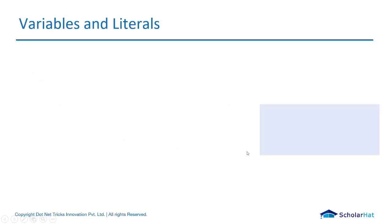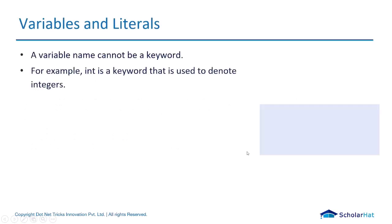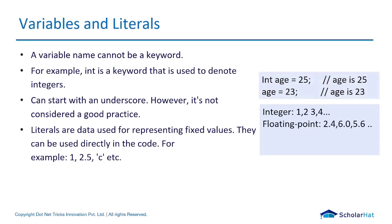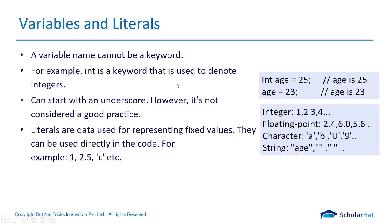A variable name cannot be a keyword. A keyword is a name already reserved by the compiler. For example, 'int' is a keyword denoting integer, 'float' is a keyword for floating point numbers, and 'char' and 'string' are also keywords. You cannot use those reserved words as variable names. We'll discuss keywords and data types in more detail later.